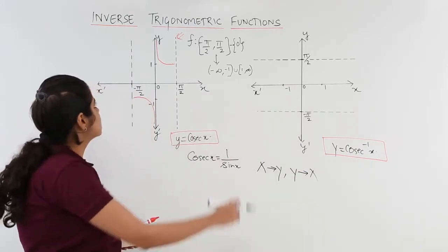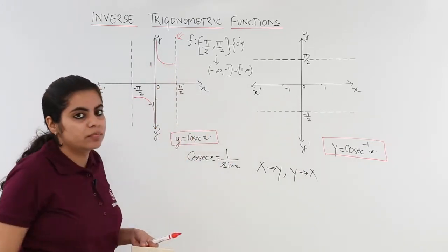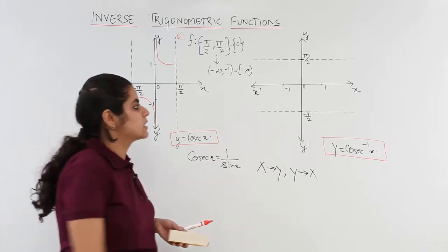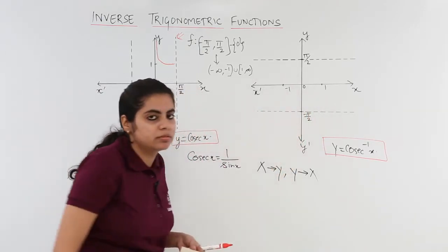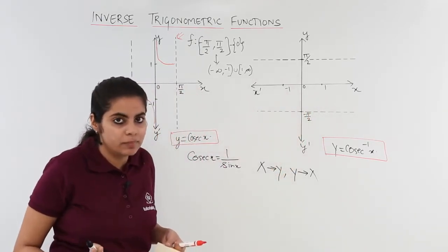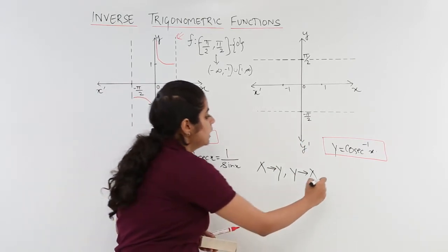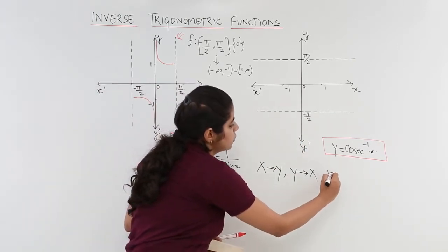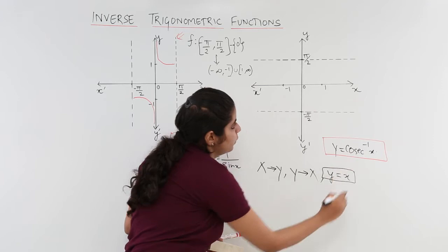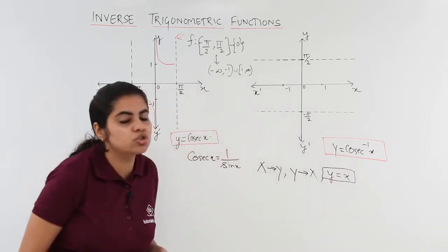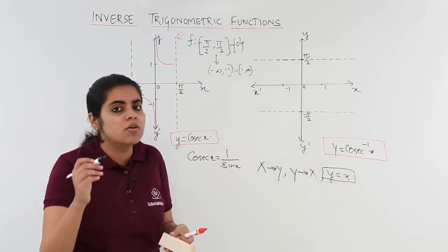Step two: interchange the y-axis with the x-axis. The y-axis had values 1, 0, minus 1 — now those become the x-axis values: 1, 0, minus 1. Step three: take the reflection about the line y is equal to x.